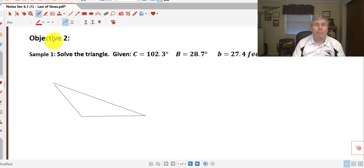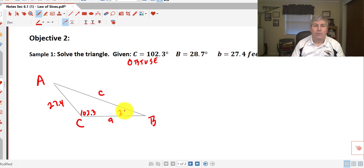Here in objective two, we want to solve the triangle given angle C is 102.3, angle B is 28.7, and side b is 27.4 feet. We have an obtuse triangle here. I'm going to go ahead and label my angle C, the one that appears to be obtuse, as 102.3, and I'll label my side A. Side b is 27.4. We don't know what side c is. Angle B is 28.7. These are in degrees, so we've got to make sure our calculator is in degree mode.